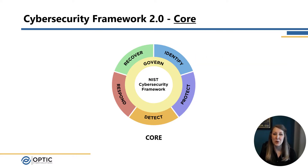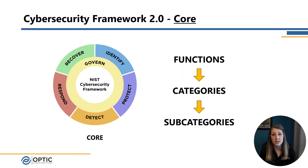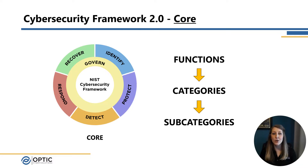The core is written in plain language and gives you an idea of what you need to do. It's written in a hierarchical structure, starting out with the functions at the top, breaking down into categories, and then subcategories at the lowest level. This has been one of the key values of the CSF over the last decade because it allows you to talk to people at the level they are. For example, you can have a conversation with your board at the function level, talking about how you're protecting your systems and responding to incidents. But when you need to talk to your team, you can get into the weeds at the subcategory level, talking about your backup strategy or the new tool you're going to use for anomaly detection. The core provides flexibility for companies to figure out what works best for them without dictating exactly what you have to do.